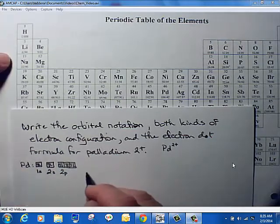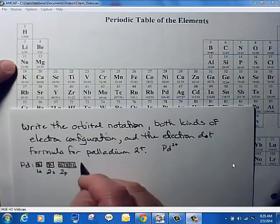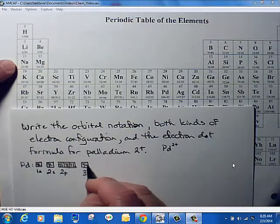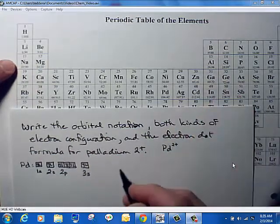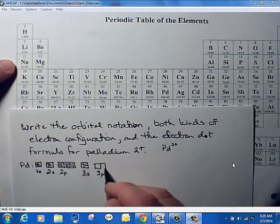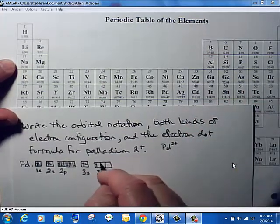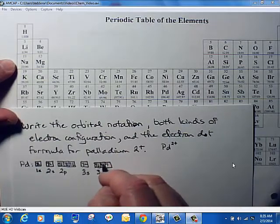Then we get to 3, and for sodium and magnesium here, we've got 3s, and there's two electrons there. Then 3p over here. There are 3 orbitals in this section, so we've got 1, 2, 3, 4, 5, 6.